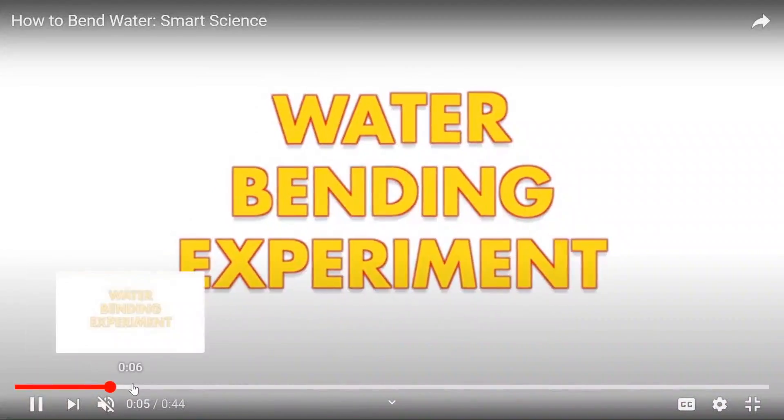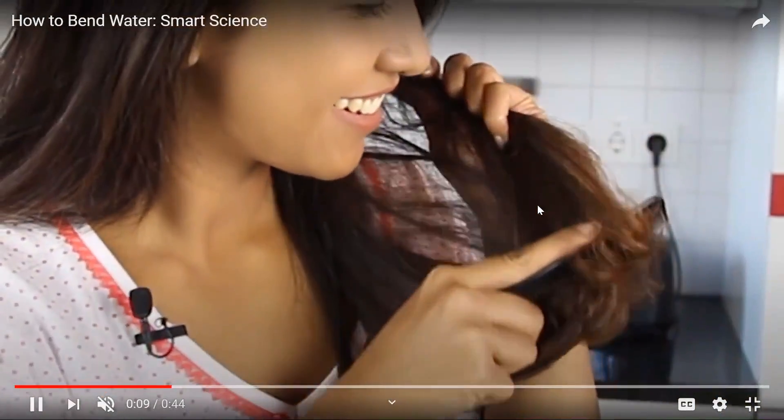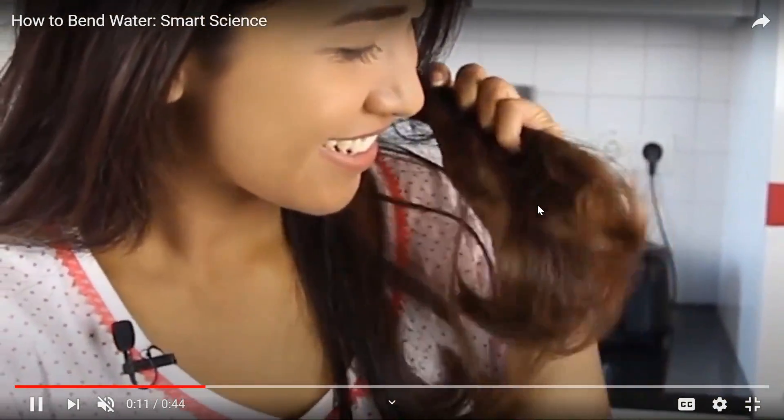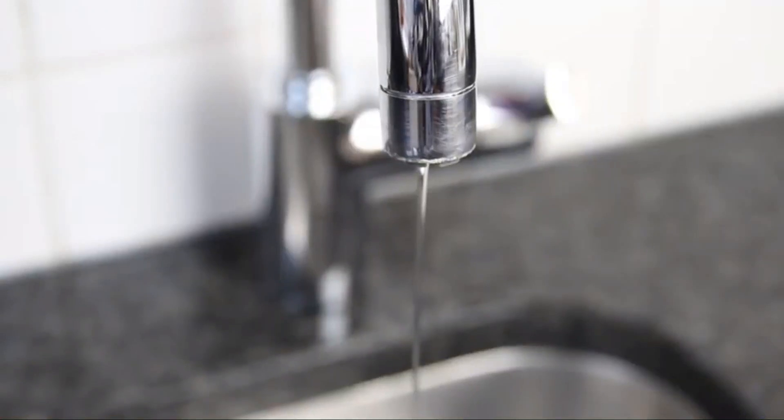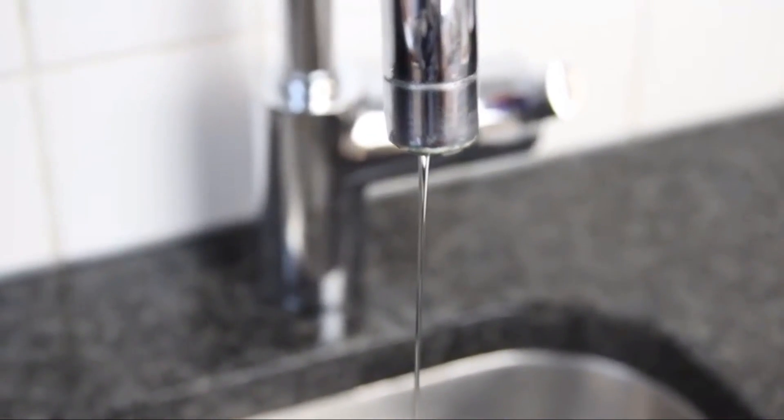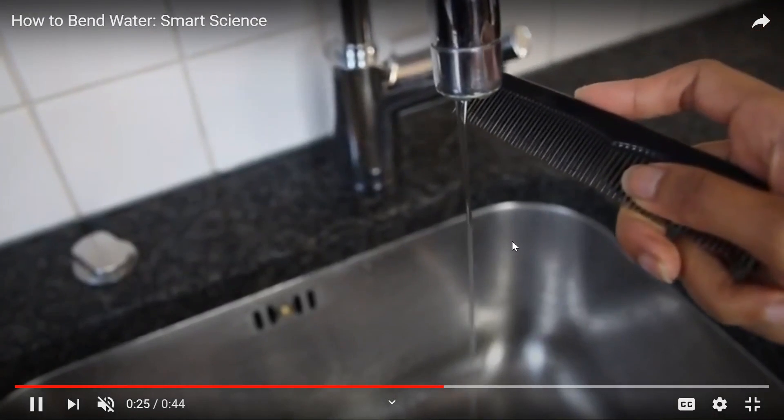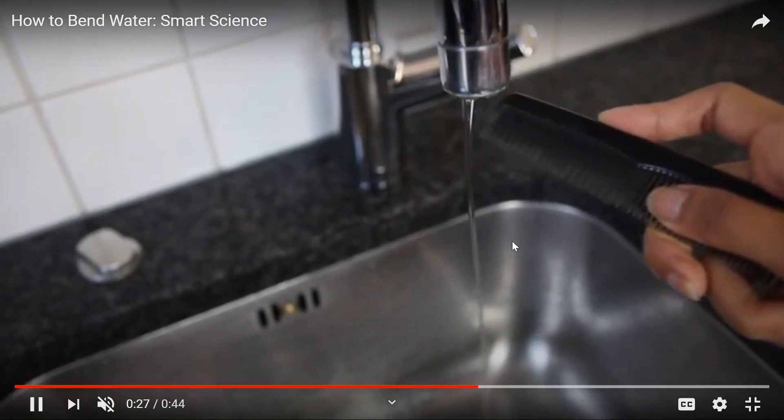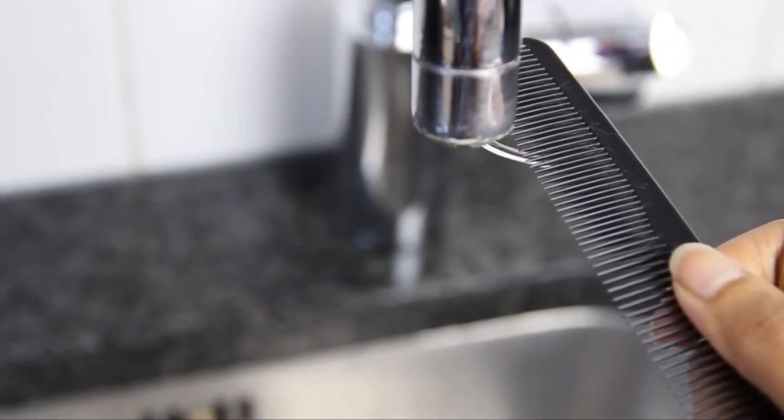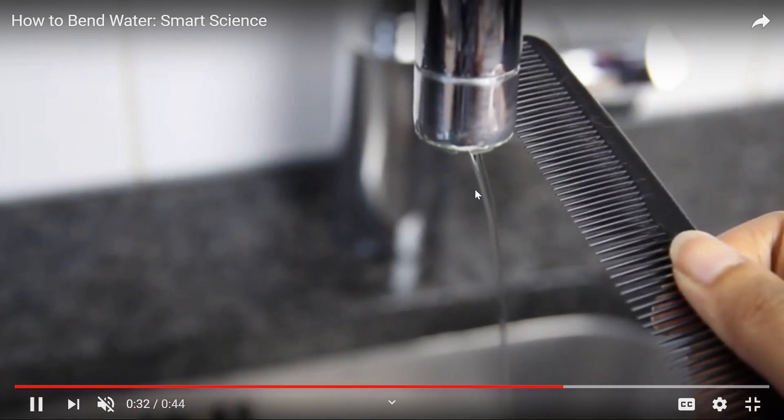Notice in this video, this girl, she's going to take a comb and she's going to run it through her hair several times, and after she runs it through her hair, she's then going to place the comb next to a steady stream of water, like this. And notice what happens as the comb gets closer to the water. Notice how the water actually bends.